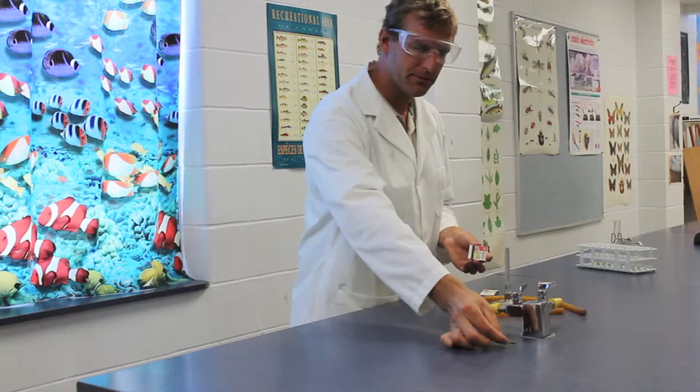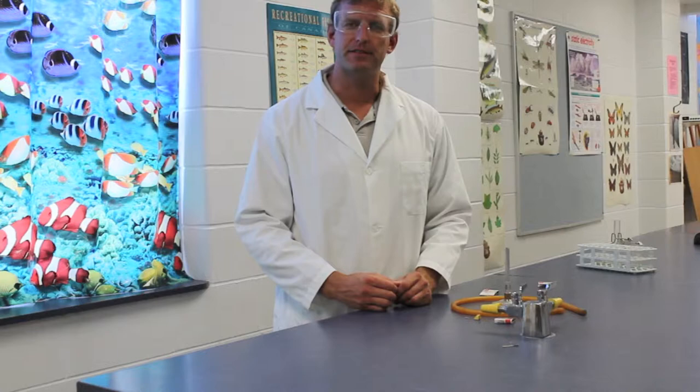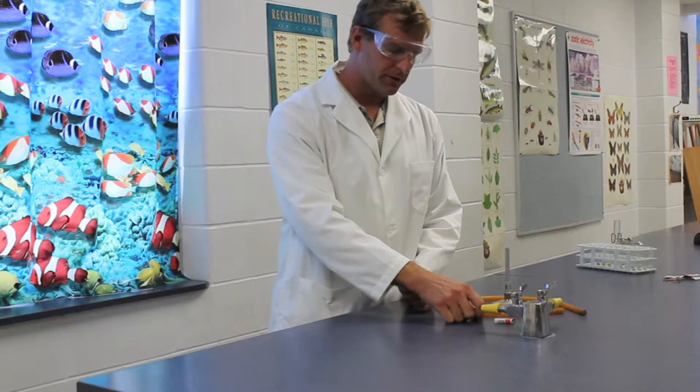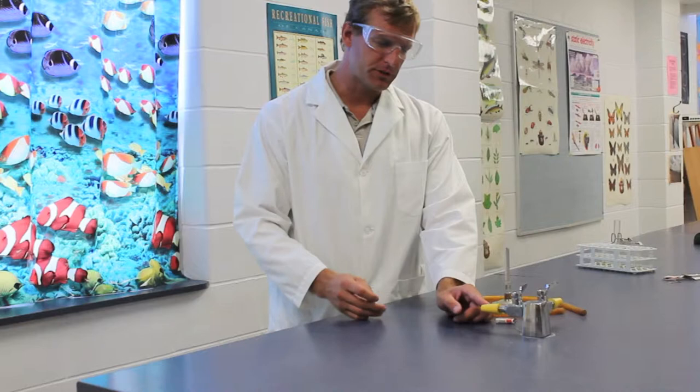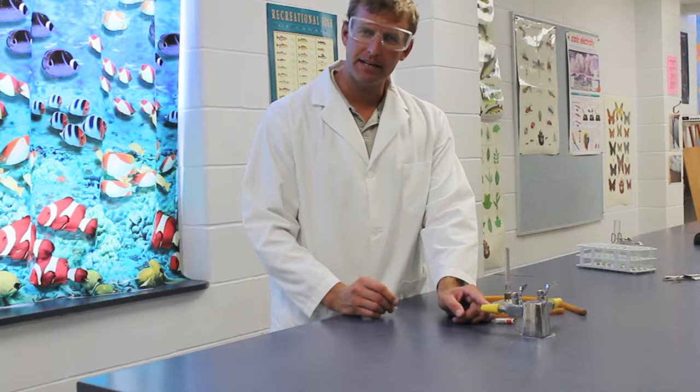Next up, we have assembling the Bunsen burner. So putting this all together, what we first need to do is take this yellow cover off of the gas tab. The reason why these gas tabs have these yellow covers on them is because sometimes in a classroom, a student will stick their pencil into the end of the gas tab, break it off, and it creates a huge maintenance issue.